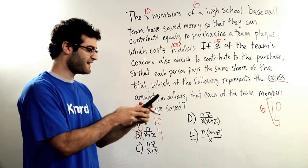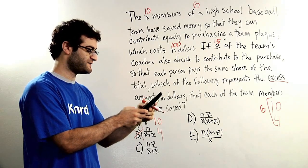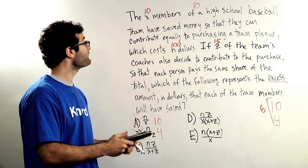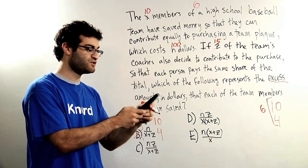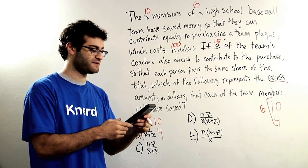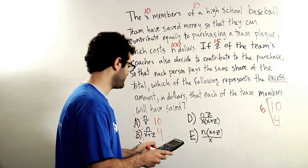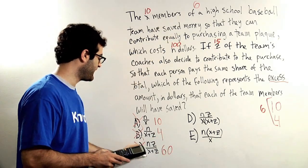Answer choice C, n times z, so that's parentheses 100 times 15, over, right, divided by parentheses x plus z, which is 10 plus 15. I'm using really good parentheses here to make sure that I don't mess up the order of operations. So 100 times 15 over 10 plus 15 is 60. 60 is not my goal number of 6, goodbye answer choice C.